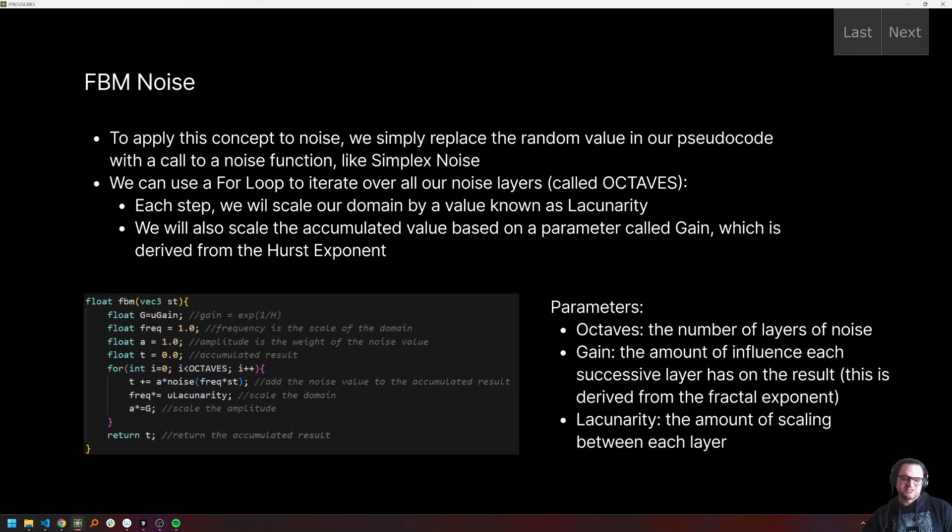So I just list those parameters over on the side against the example code. So we have our octaves, which is the number of layers or sub steps, our gain, which is the amount of influence each successive layer has on the result. And then our lacunarity, which is the amount of scaling of the domain between each layer or sub step. So when we implement all of this, we are going to be able to kind of recreate the classic FBM noise.